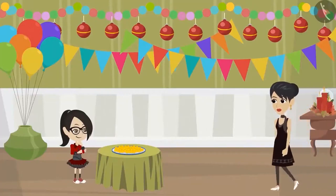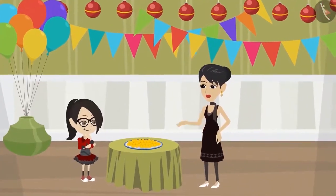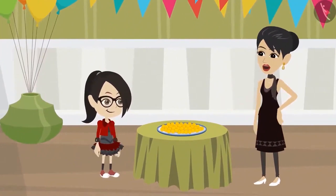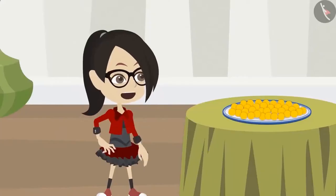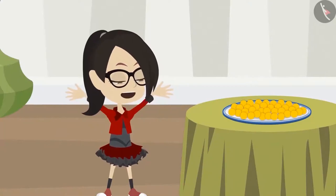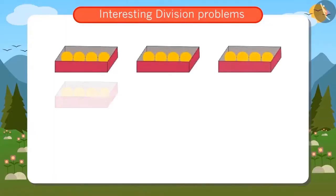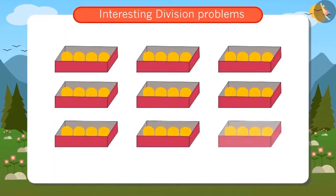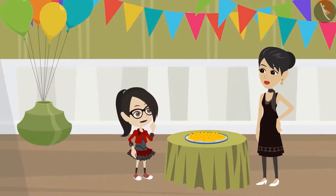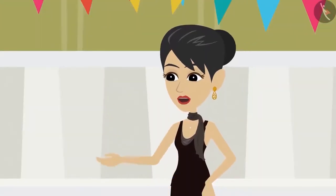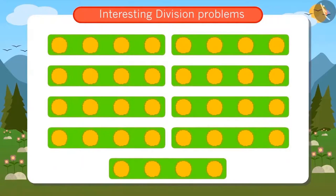That's when Mummy comes from inside and sees Vandana still standing there. Hey Vandana, why are you still standing here? Yes Mummy, I am leaving now. Till now I was figuring out how many boxes I have to buy to keep 36 ladoos. Oh, that is very easy. If four ladoos come in a box, then nine boxes are needed for 36 ladoos. Mummy, how did you find the answer so quickly? It took me so long to do it. I used division and found out.